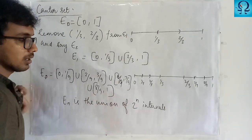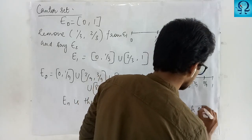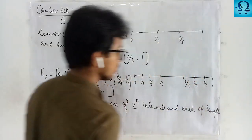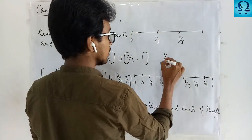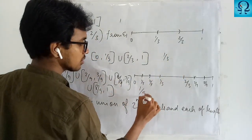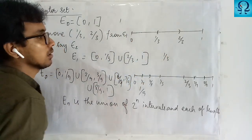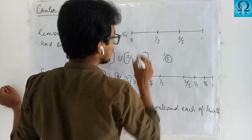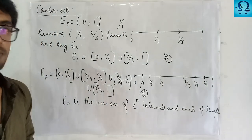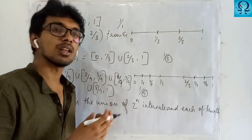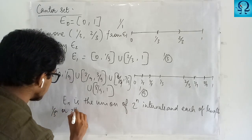En is the union of 2^n intervals, each of a certain length. Here the length is 1 for E0, 1/3 for E1, and 1/9 for E2. The lengths come in powers of 3, so each interval in En has length 1/3^n.